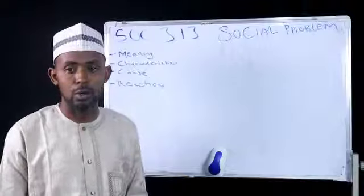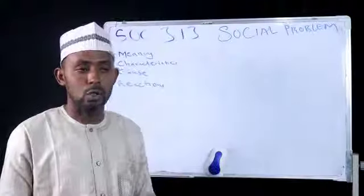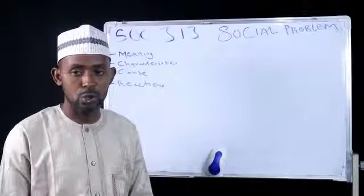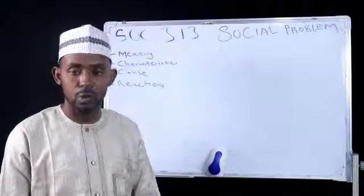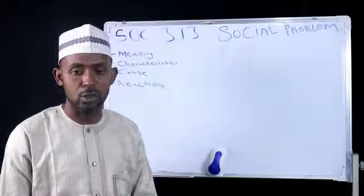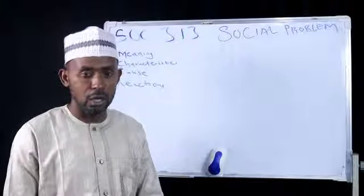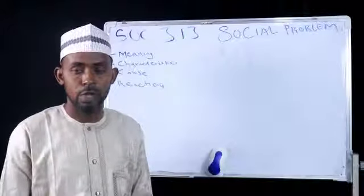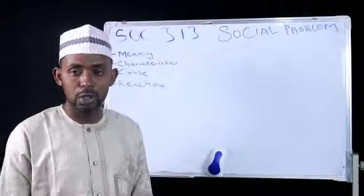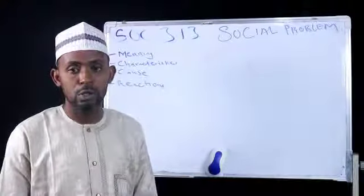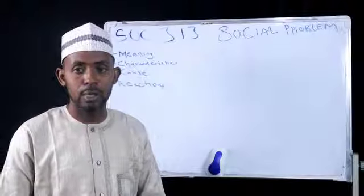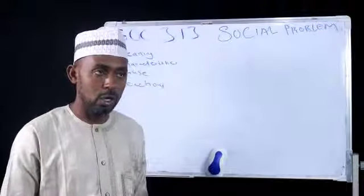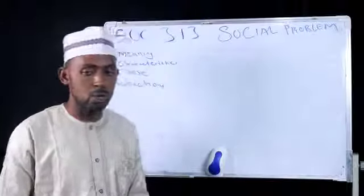Another type of social problem which is common in our country Nigeria and in some other countries is public disturbance. Public disturbance is a social problem which we experience more especially in the third world countries, which Nigeria is one of them. For instance, your neighbor will run his generator — what we call 'I pass my neighbor' — disturbing the public and causing all sorts of problems in the society. So public disturbance is one of the social problems.